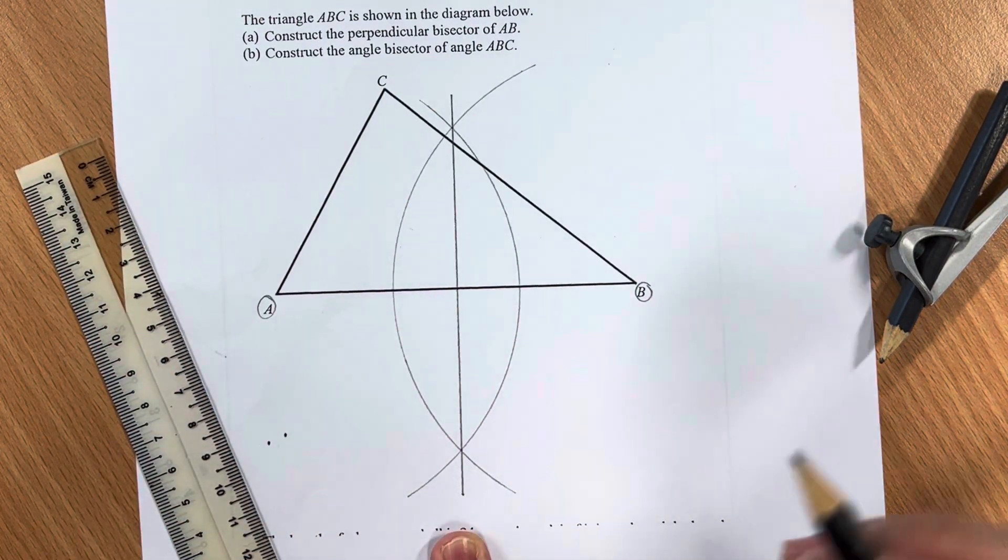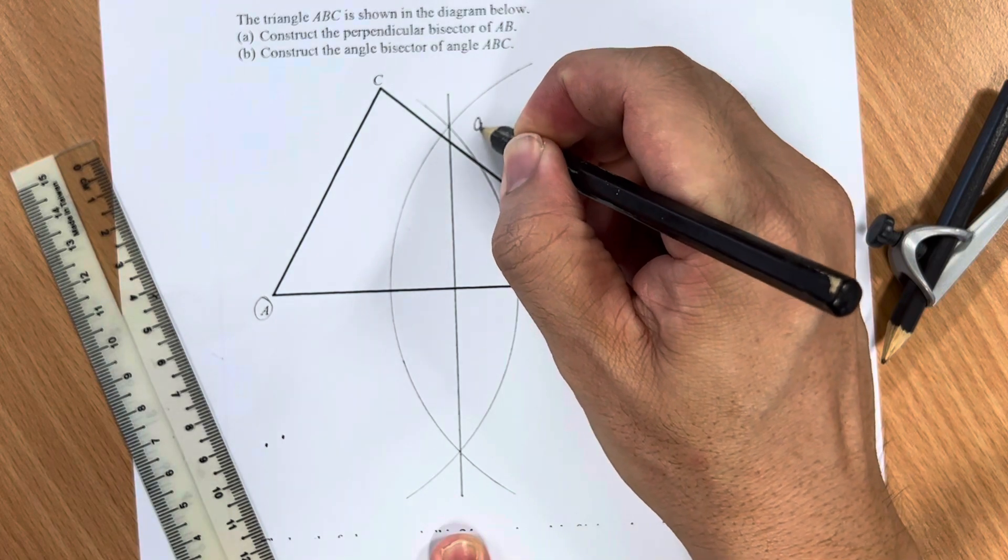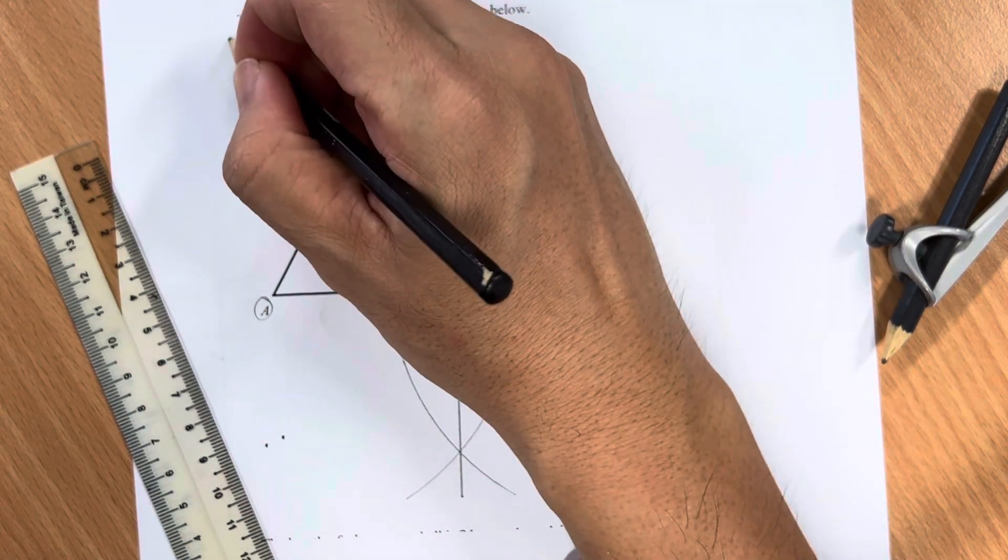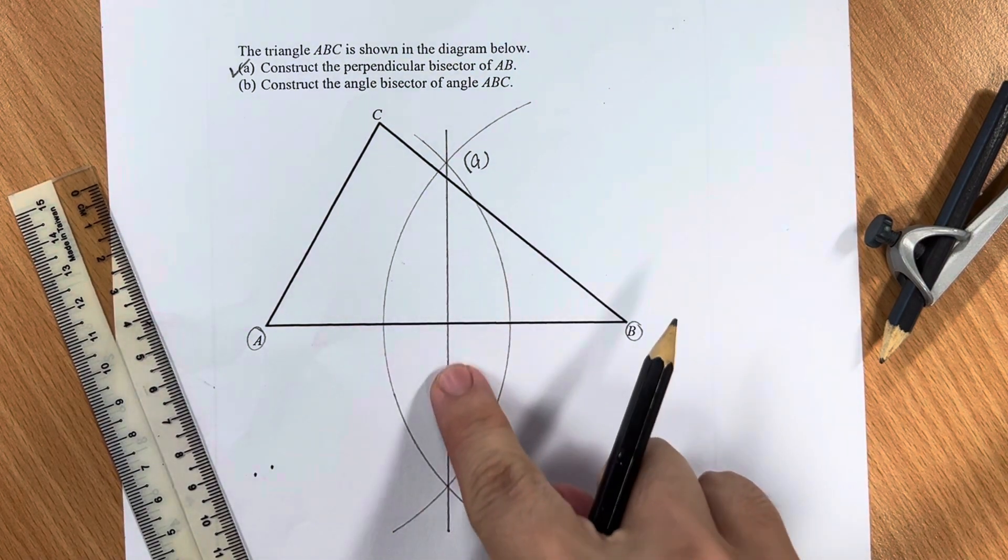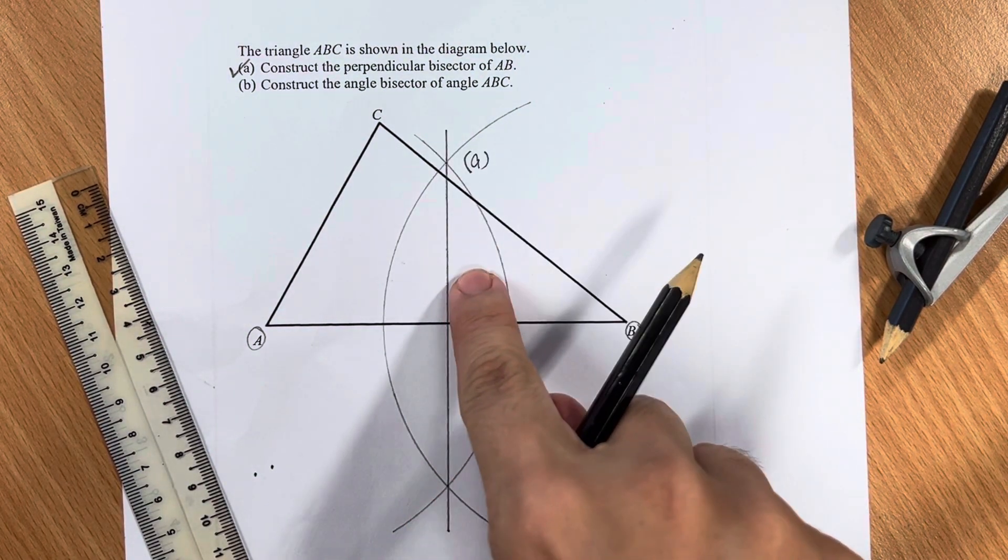By joining these two intersection points, we have successfully completed the drawing of the perpendicular bisector.